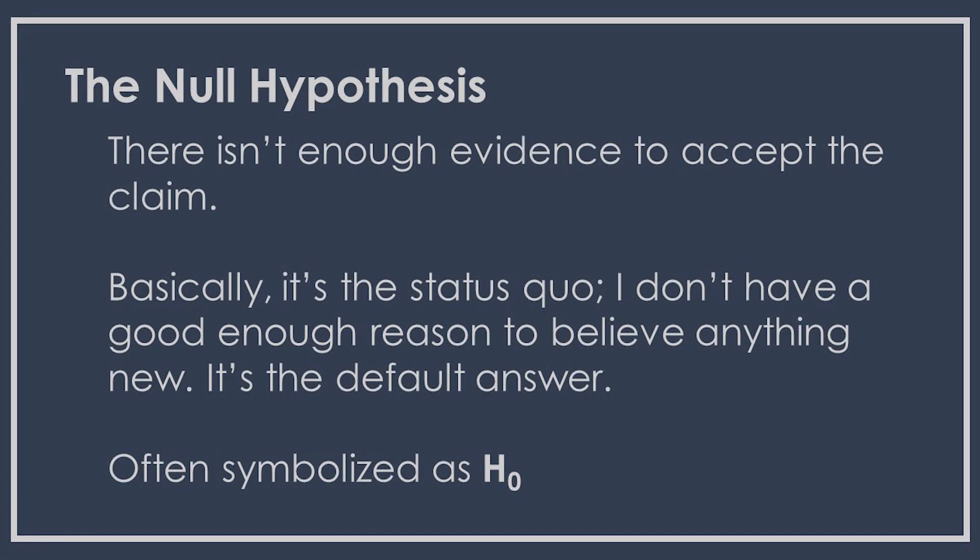Often in statistics, we symbolize the null hypothesis as H sub zero, and we usually pit that against an alternative hypothesis, which is sometimes H sub one or H sub a, for alternative. Often in a well-designed experiment, you're going to be pitting the null hypothesis — that nothing happens — against the alternative hypothesis that something happens.